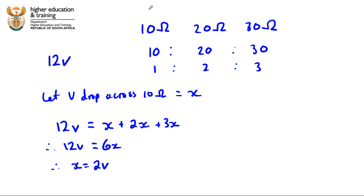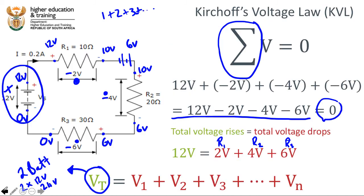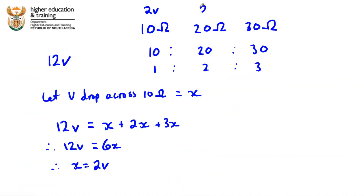So the voltage drop across the 10 ohm resistor is x, which is 2 volts. The voltage drop across the 20 ohm resistor is 2x, which is 4 volts. And the voltage drop across the 30 ohm resistor is 3x, so 3 times 2 volts equals 6 volts. That's a neat way to work out the actual voltage drops — all you need to know is the total voltage gain in the circuit and the ratio of the resistors in series.